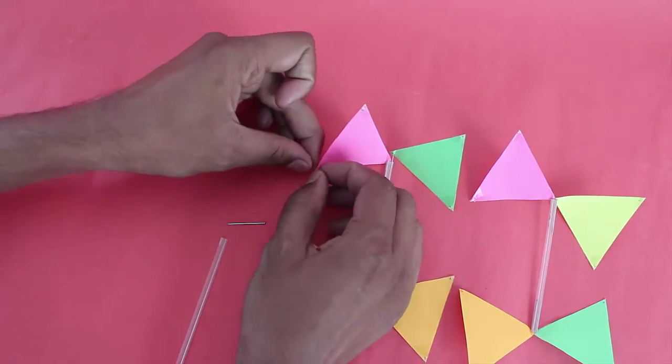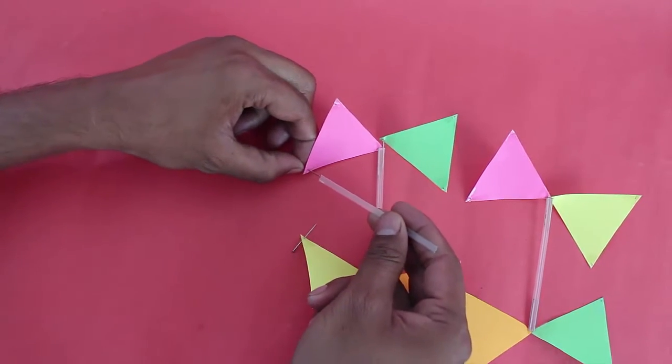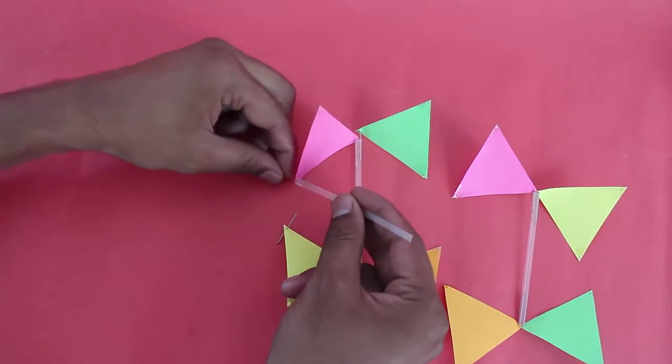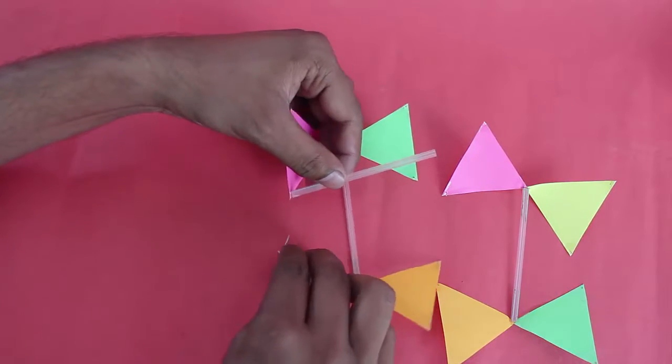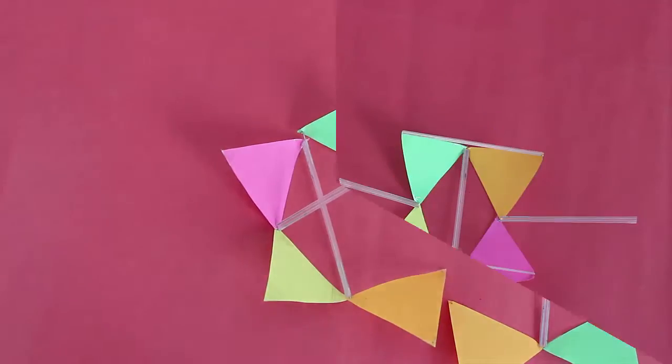Add another two stirrers as shown. Now assemble the two separate pieces by inserting pins from the triangles into the stirrer holes. Continue doing this until you make a stable structure.